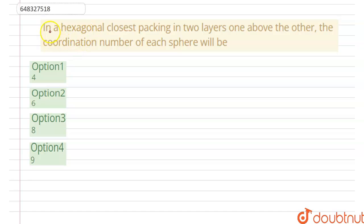Hello students, let's start the question. In a hexagonal closest packing in two layers, one above the other, the coordination number of each sphere will be.